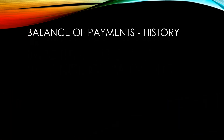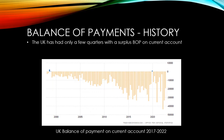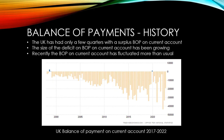The UK has had only a few quarters with a surplus balance of payments on current account. The size of the deficit on balance of payments on current account has been growing. Recently the balance of payments on current account has fluctuated more than usual, with some very low and very high numbers for different quarters.